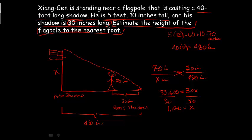Your answer, it says estimate the height of the flagpole to the nearest foot. So I'm going to have to take these inches and convert it to feet. The way you do that is you take 1,120 inches divided by 12 inches, and that will tell you how many feet it is. So 1,120 divided by 12 gives me 93.3 repeating. The nearest foot means no decimals. So flagpole is 93 feet tall. That's my answer.